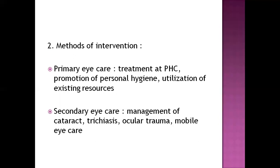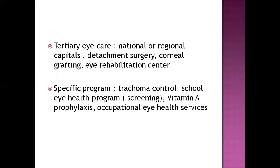Methods of intervention can be done at the primary level — the government provides facilities at the PHP level, including treatment regarding blindness, promotion of personal hygiene through health education, and utilization of existing resources to provide education about blindness, cataract, and glaucoma. Secondary eye care includes mobile eye care and zonal or district-level hospitals, where management of cataract, trichiasis, and ocular trauma is done through both medical and surgical management. Tertiary eye care involves national or regional hospitals performing advanced surgeries using advanced technologies, such as retinal detachment surgery and corneal grafting, along with eye rehabilitation centers.